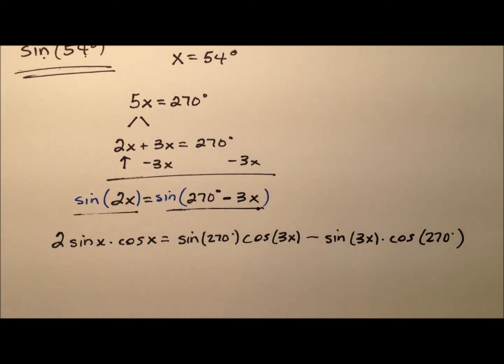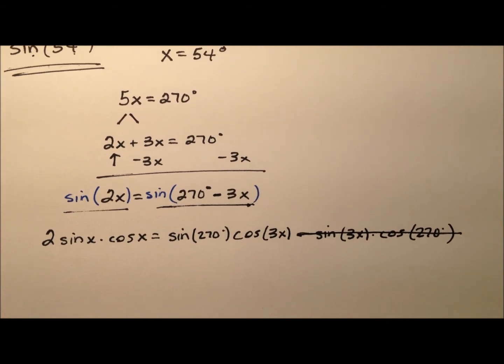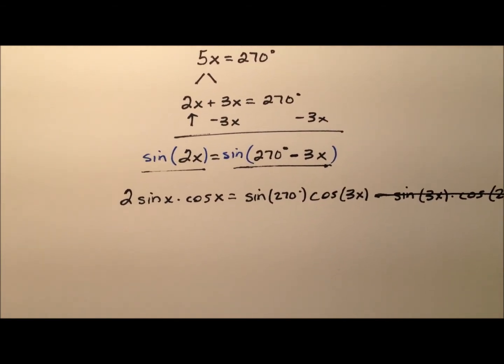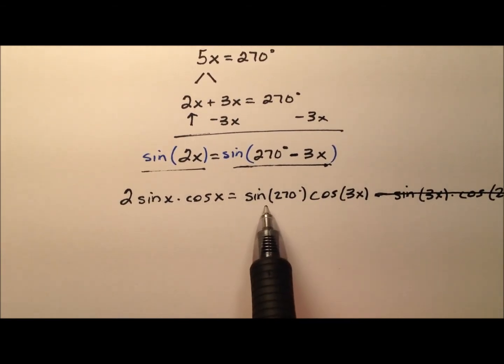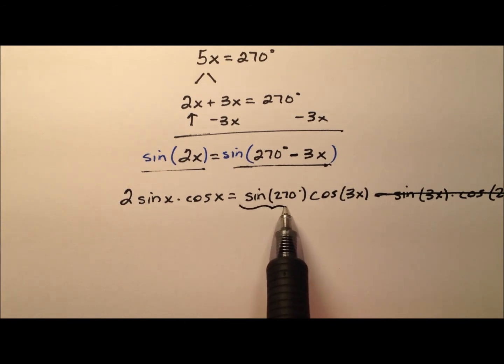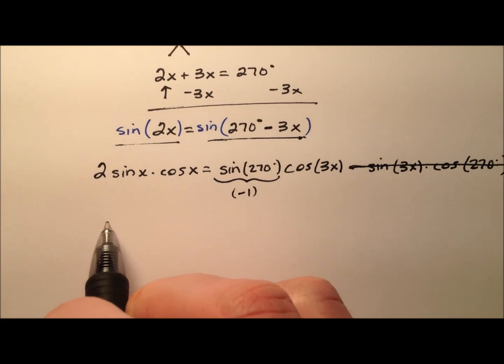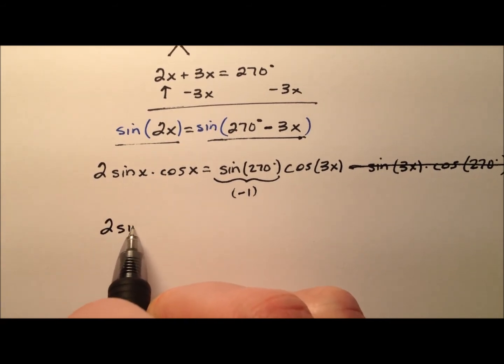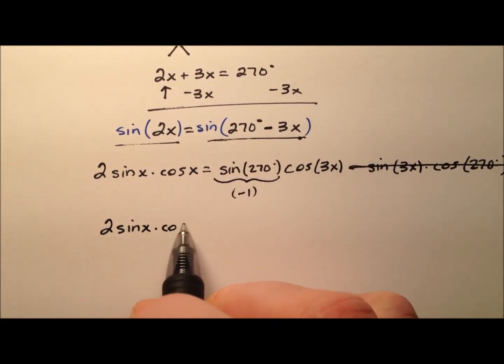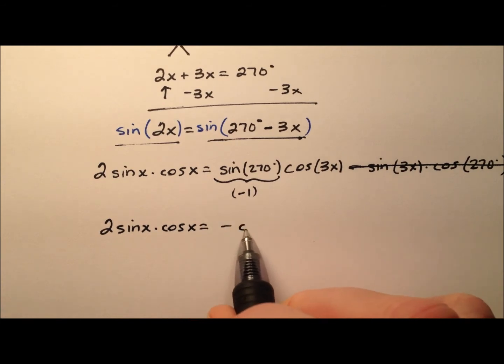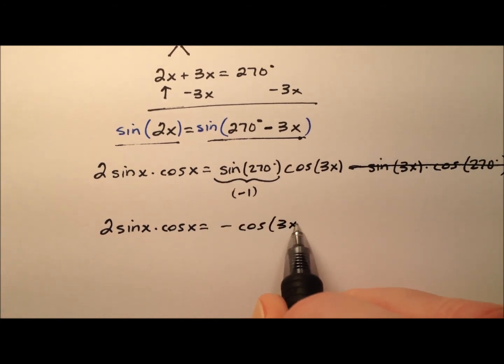Well, some nice things are going to happen here because the cosine of 270 is 0. So it actually makes that entire part of the expression just 0 out. So really, I'm only left with this. And actually, the sine of 270 degrees is negative 1.